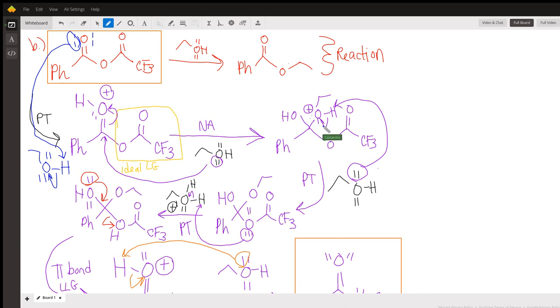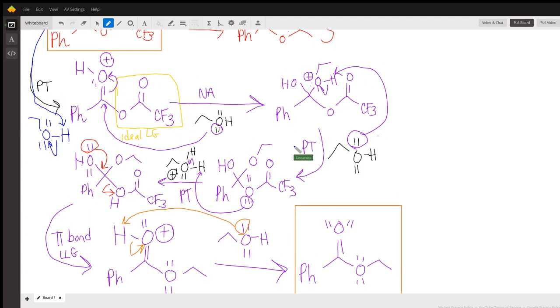Now what we want to do is make that alcohol group more stable and that leaving group less stable. The way we can do that is a series of proton transfers. So the first one we'll do is to make that alcohol group more stable.